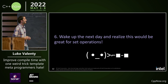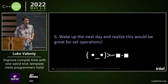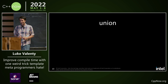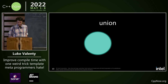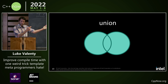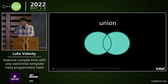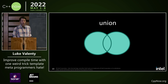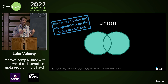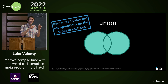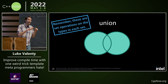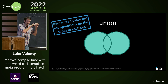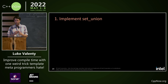Wake up the next day and realize this would be great for set operations. Union — you take one set and you add the elements of the other set and you have the unique elements from all of them. Remember, this is set operations on the types in each set, so the result output is also a tuple.